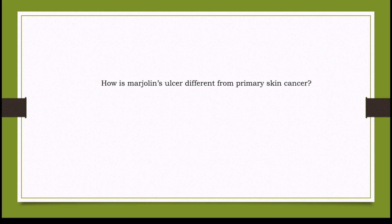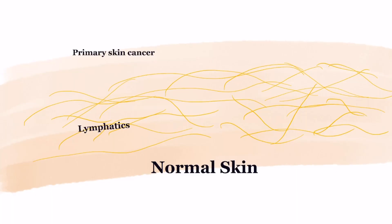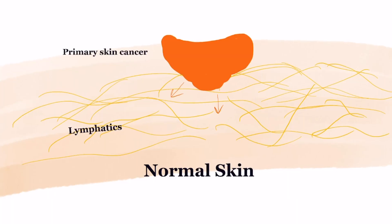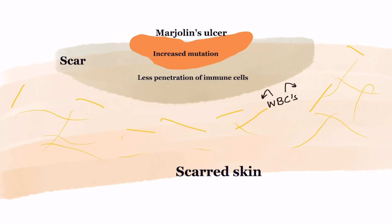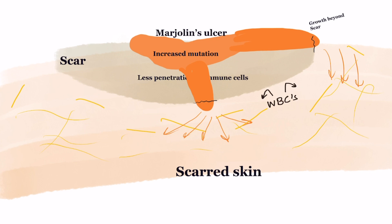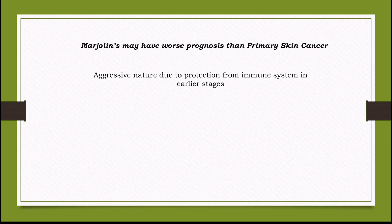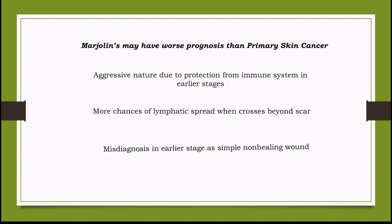How is Marjolin's ulcer different from primary skin cancer? Primary skin cancer developing in healthy skin spreads mainly by lymphatic routes. In Marjolin's ulcer, the scarred skin is a fibrous area poor in lymphatics, so lymphatic spread appears late. However, this also confers protection from immunological recognition — in early stages, dense scar prevents adequate immunological attack on the tumor, leading to continuous accumulation of mutations. By the time Marjolin's ulcer penetrates the scar into healthy tissue, there is aggressive lymphatic metastasis. Hence growth beyond the scar is a bad sign, and in some studies Marjolin's ulcer has worse prognosis than primary skin cancer. Another reason is late presentation due to misdiagnosis of a non-healing wound.